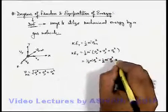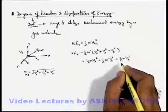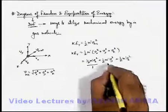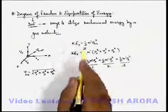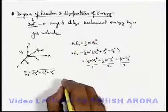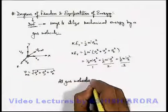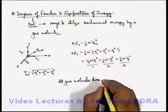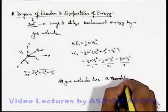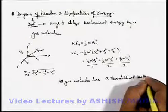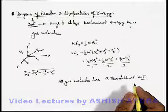Half-m-v-y squared is the kinetic energy with which it is moving in the y-direction, and half-m-v-z squared is the kinetic energy with which it is moving in the z-direction. So here we can see there are 3 ways in which the gas molecule can utilize its total translational energy. Therefore, all gas molecules have 3 translational degrees of freedom.